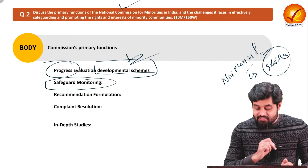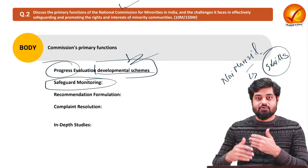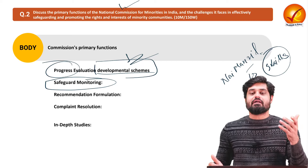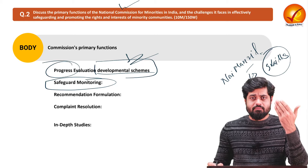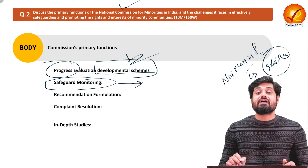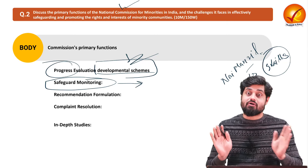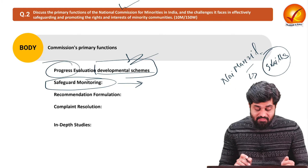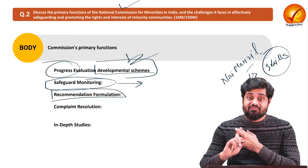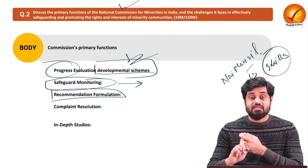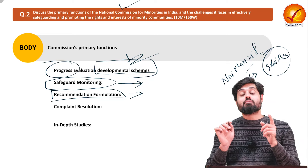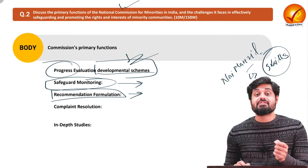Safeguard monitoring is another primary function. Since the Constitution provides certain safeguards — for example, Article 30 grants minorities the right to establish minority institutions — the commission must check whether these safeguards are properly implemented on the ground. Recommendation formulation is also important: if safeguards are not being executed, the commission must identify the problems and recommend solutions to the government, ensuring accountability of the executive.